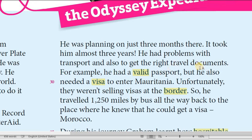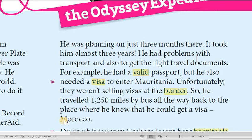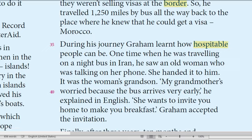For example, he had a valid passport but his problem wasn't the passport — he also needed a visa to enter Mauritania. Mauritania required a visa for him. Unfortunately, they weren't selling visas at the border at all. So he had to travel 1,250 miles by bus all the way back to the place where he knew he could get a visa — which was Morocco. Imagine — he had to go all the way to Morocco just to be able to enter Mauritania.